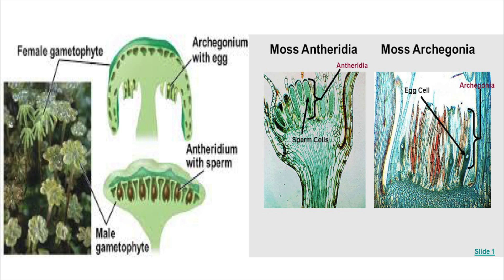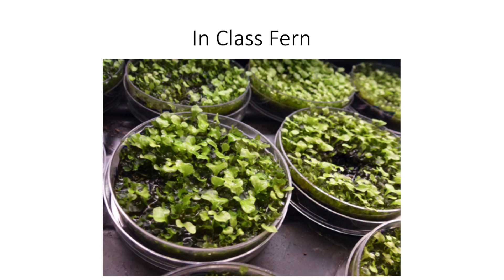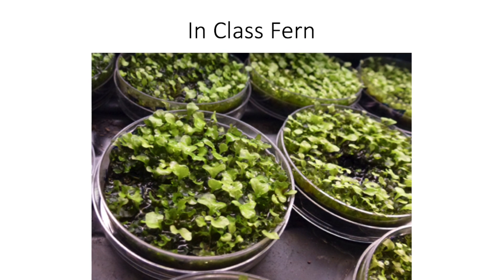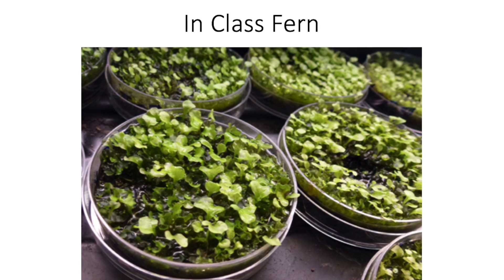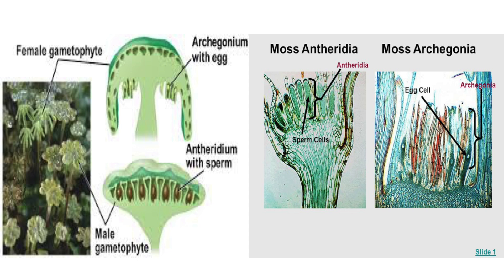An antheridium is a haploid structure or organ producing and containing the male gametes or sperm. Antheridia are present in the gametophyte phase, like bryophytes and the fern that was grown in class. During pollination, this generative cell divides and gives rise to sperm cells.